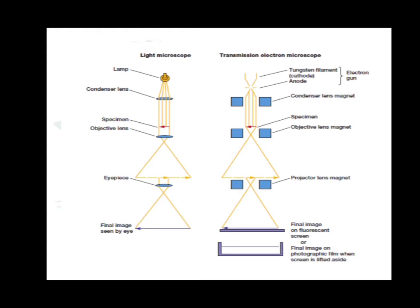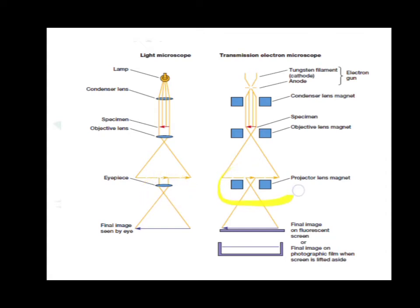The similarity between light microscope and electron microscope: the lamp corresponds to the tungsten filament; the condenser lens corresponds to the condenser lens magnet; the specimen position is the same; the objective lens corresponds to the objective lens magnet; the eyepiece lens corresponds to the projector lens magnet. In the light microscope we observe directly by eye, but in the electron microscope we use an image plate to view objects.